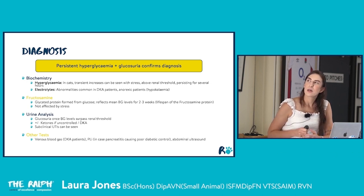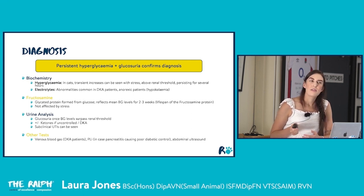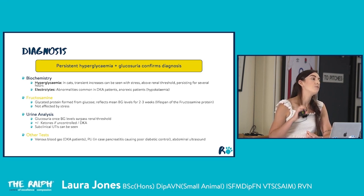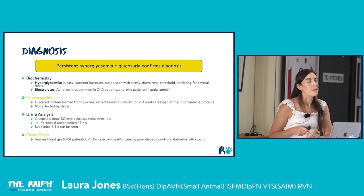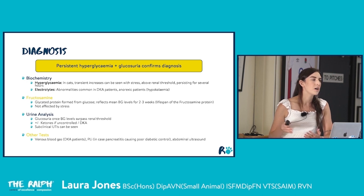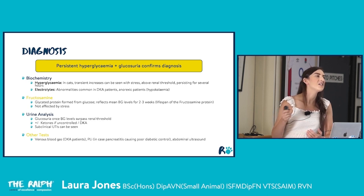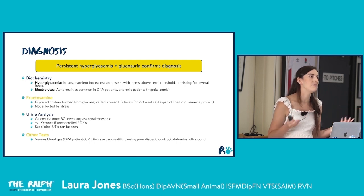Because stress hyperglycemia makes blood glucose interpretation challenging in cats, fructosamine is a useful confirmatory test. Fructosamine is a protein formed from glucose in the bloodstream that lasts about two to three weeks in circulation, giving us an average of the patient's blood glucose over that period. It's not affected by stress because those acute glucose spikes are negligible compared to the three weeks that protein circulates.